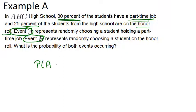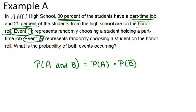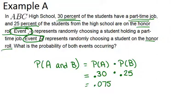The probability of event A and event B both happening is just the probability of event A times the probability of event B. Event A is a student holding a part-time job, and 30% of students have a part-time job, so that's 0.30. The probability of event B — being on the honor roll — is 25%, or 0.25. Multiplying 0.30 by 0.25 gives us 0.075, which is 7.5%. So the probability of being on the honor roll and having a part-time job is 7.5%.